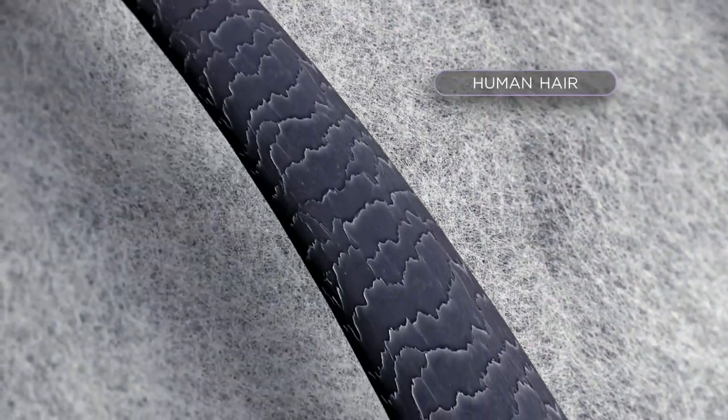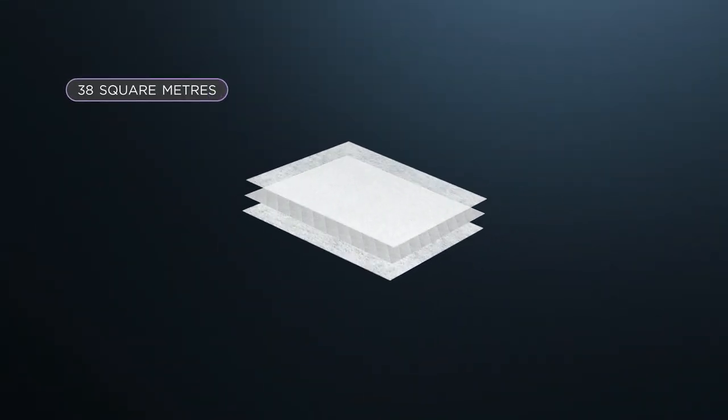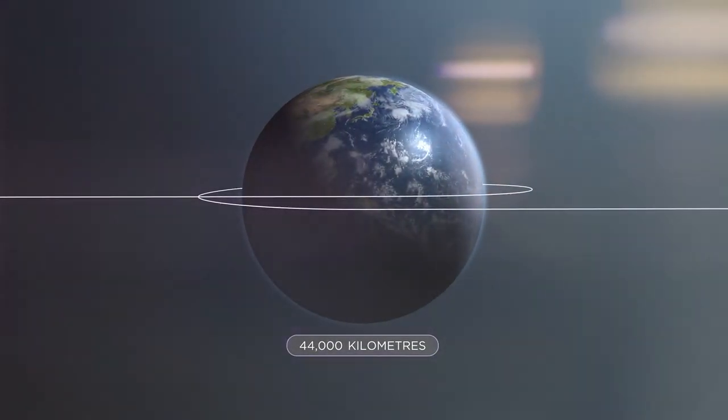Consisting of a dense web of nanofibres, which are incredibly small, each square metre of Sonolayer contains up to 38 square metres of sound absorbing surface area, and up to 44,000 kilometres of nanofibre, enough to circle the globe.